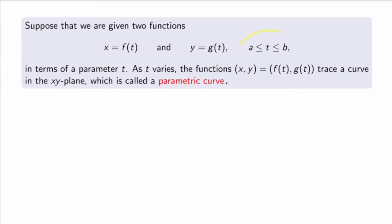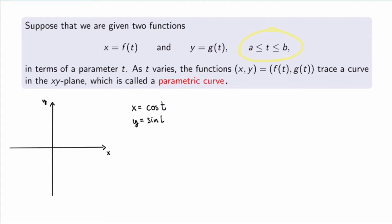The parameter t can take values either in a finite range, like between a and b, or it could take values all the way from minus infinity to infinity. The example we already encountered in our study of systems of first-order differential equations was x equal to cosine of t and y equal to sine of t, where t took values between 0 and 2π.